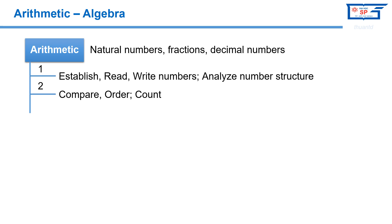Each such range is often referred to as a number cycle. Grade 2 students need to count numbers within the range of 1000, recognize the number before and after a given number, recognize the number line and write the appropriate number on it, compare two numbers within the range of 1000, determine the largest or smallest number in a group of no more than four numbers, and arrange numbers from smallest to largest or vice versa.